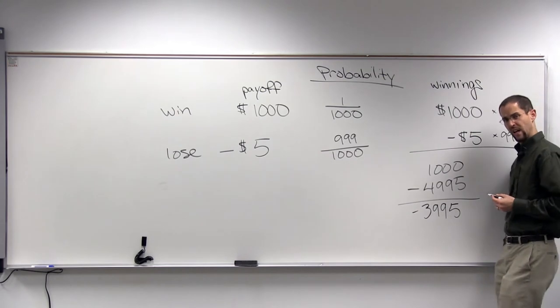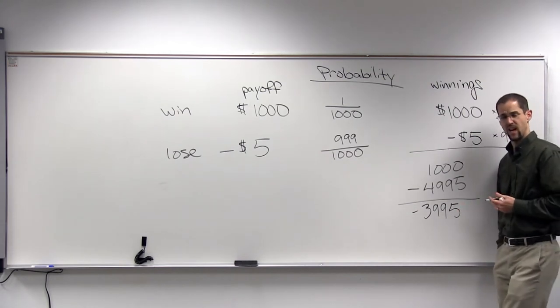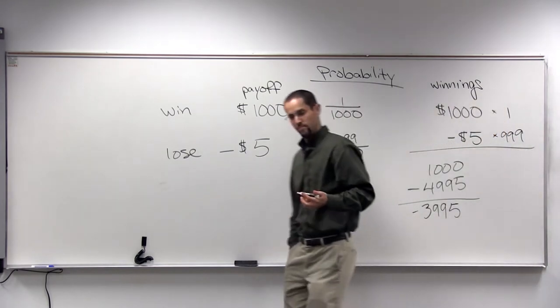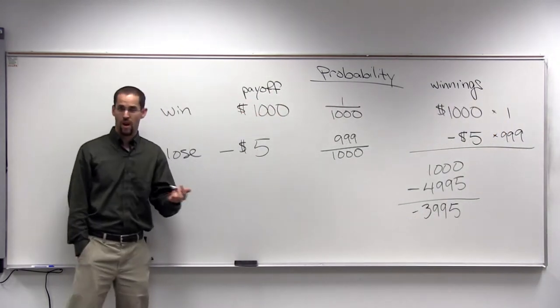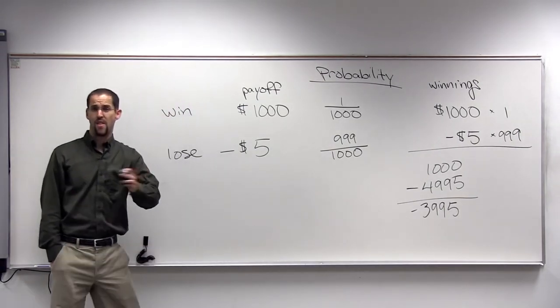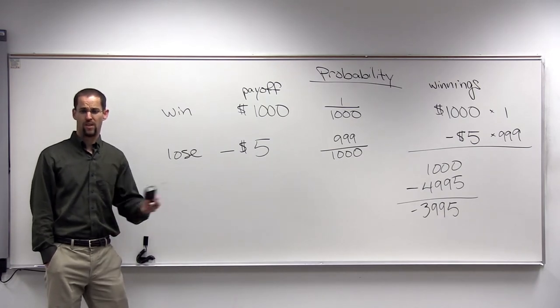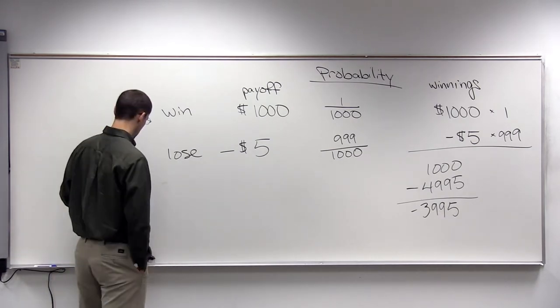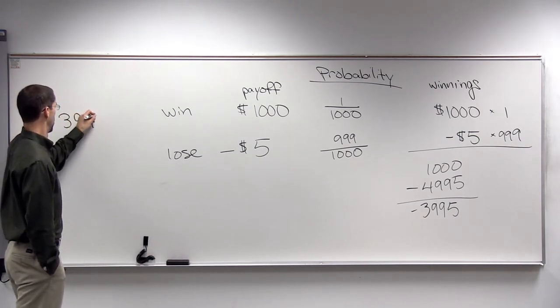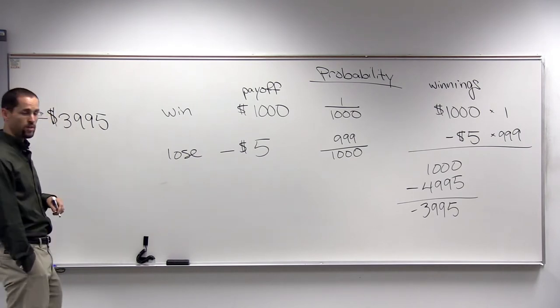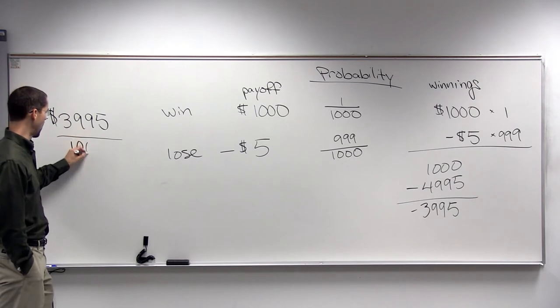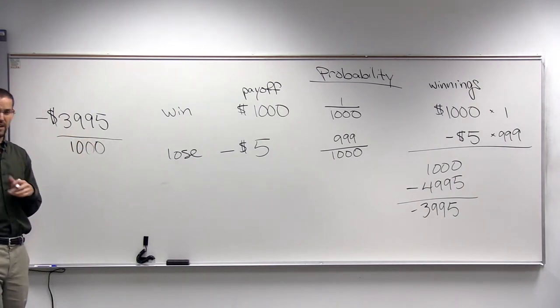In total, I'm in the hole. I've lost $3,995. But that's not per try at the lottery. That's $3,995 over 1,000 plays. 1,000 tickets you've purchased. What does that work out to be? On average. We've lost $3,995. But we played 1,000 times. We do that division.